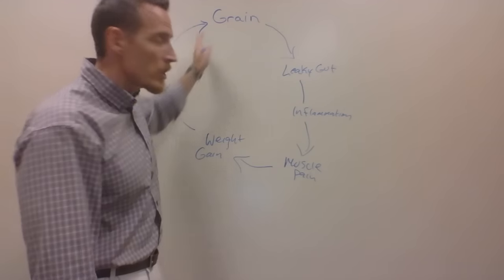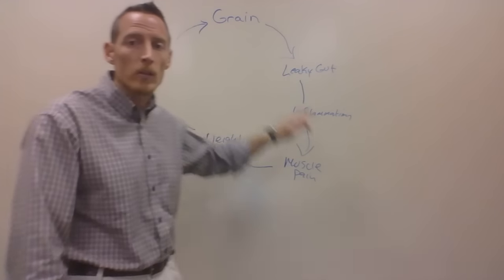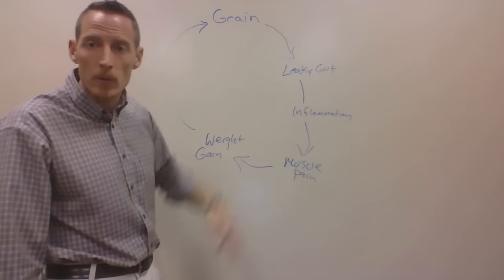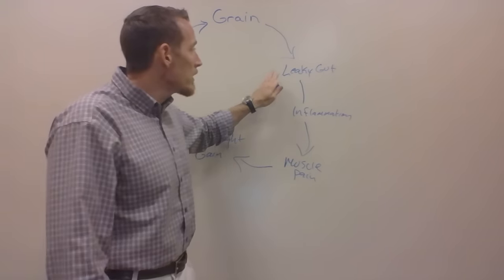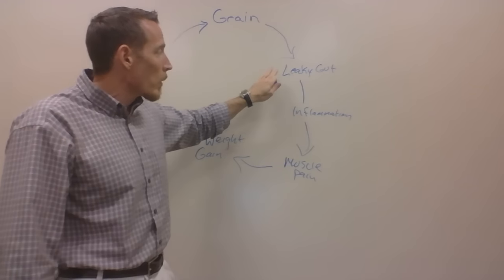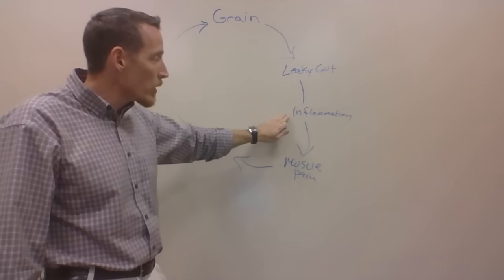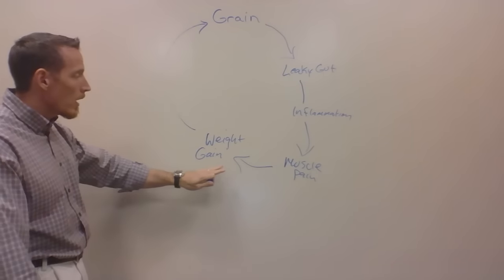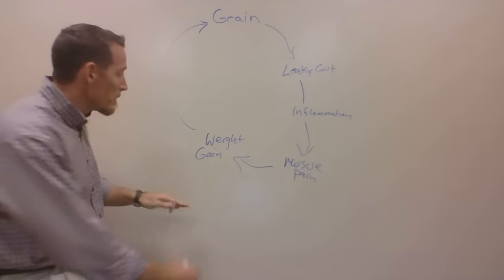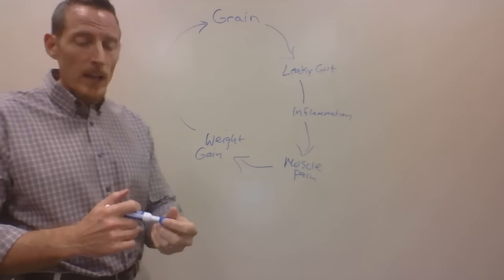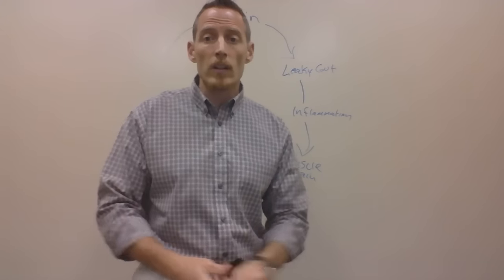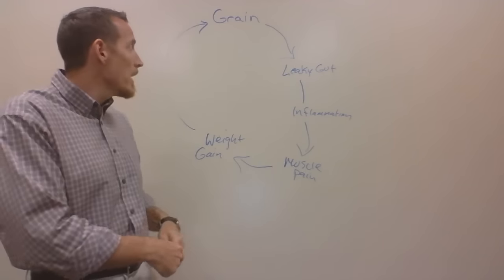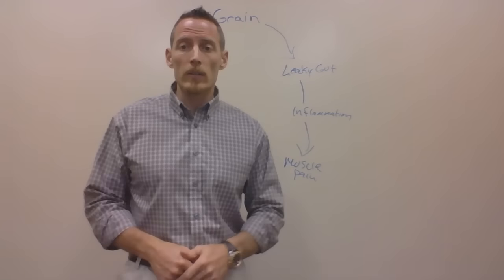Unless we make a change, we just repeat the cycle. Unless we change our diet, we just repeat the cycle. Continue to use grain as a staple food in the diet, continue to have problems with leaky gut, which lead to inflammation, which then cause muscle pain and inflammation of the tendons, ligaments, and joints. Then subsequently leads to a lack of activity, a lack of exercise because it hurts to exercise. So then we gain weight, and the cycle goes around and around.